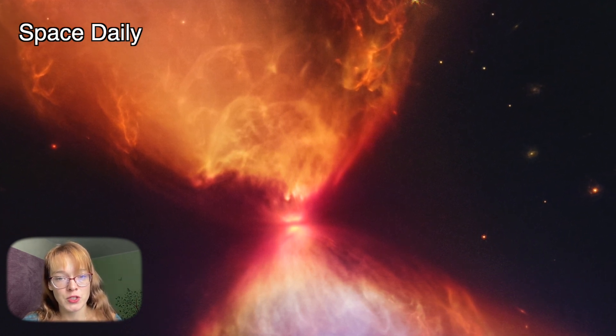This creates a dense disk of material known as an accretion disk, which feeds material to the protostar. As it gains more mass and compresses further, the temperature of its core will rise, eventually reaching the threshold for nuclear fusion to begin.